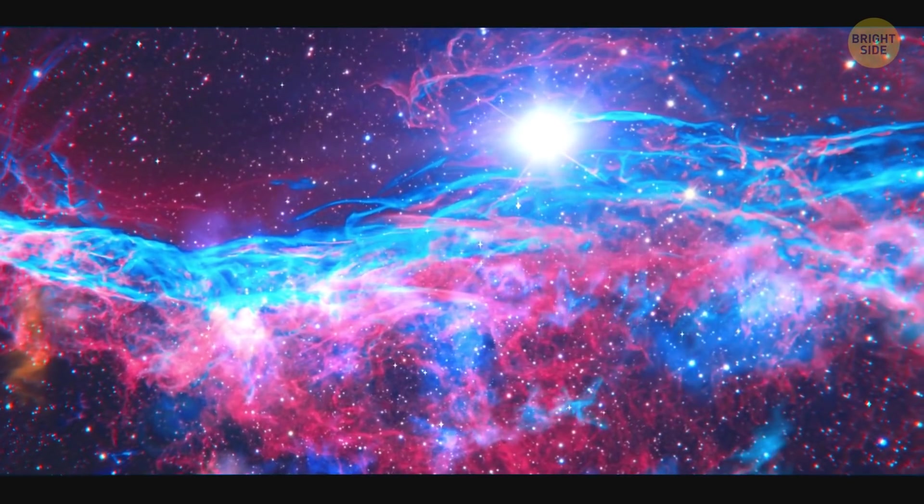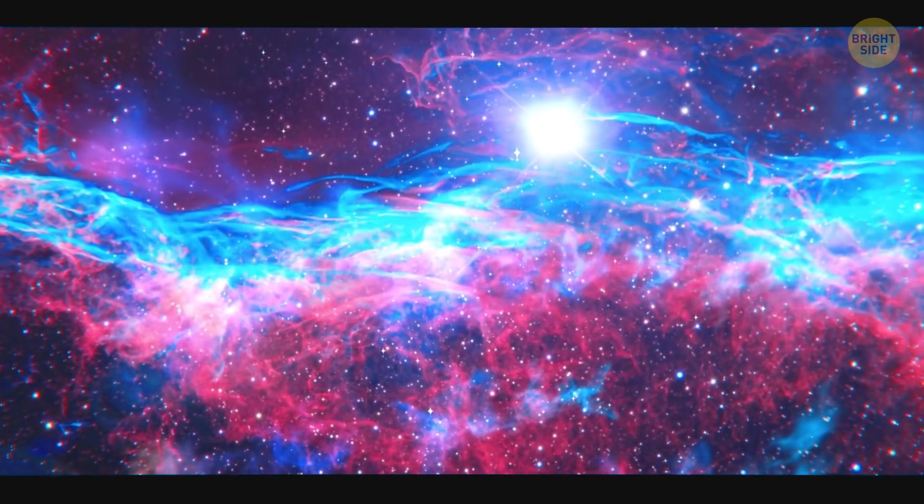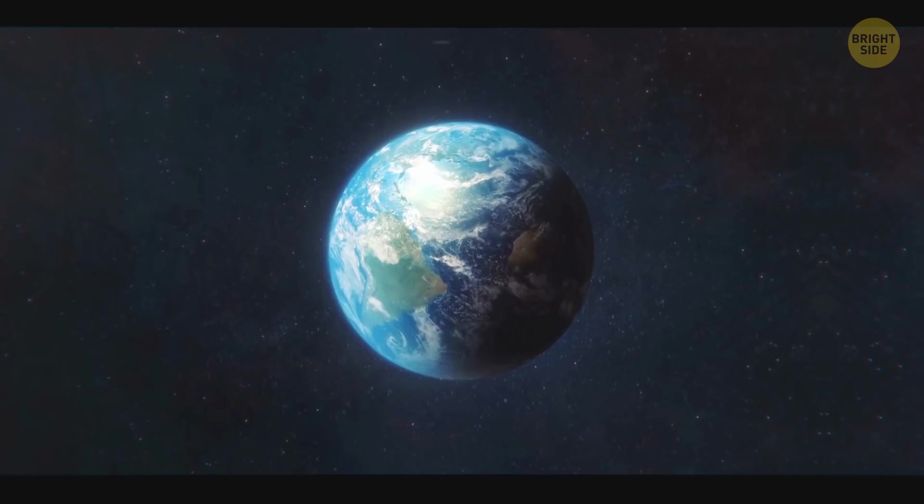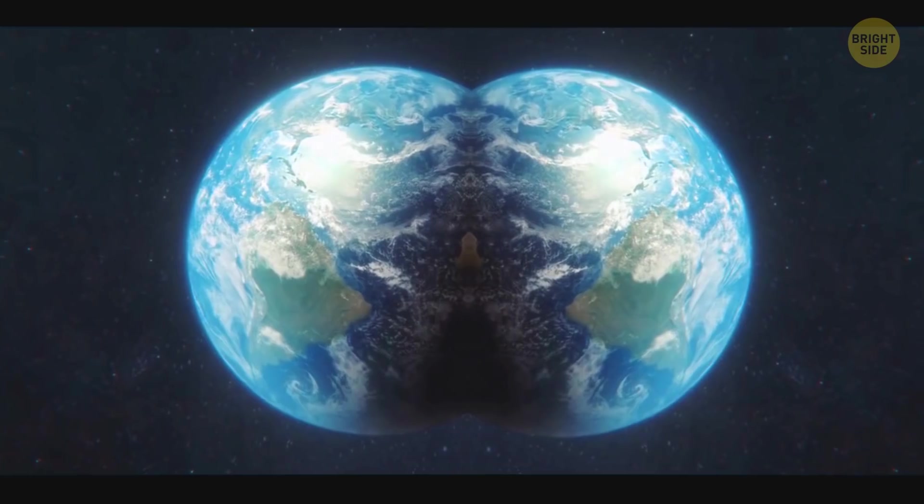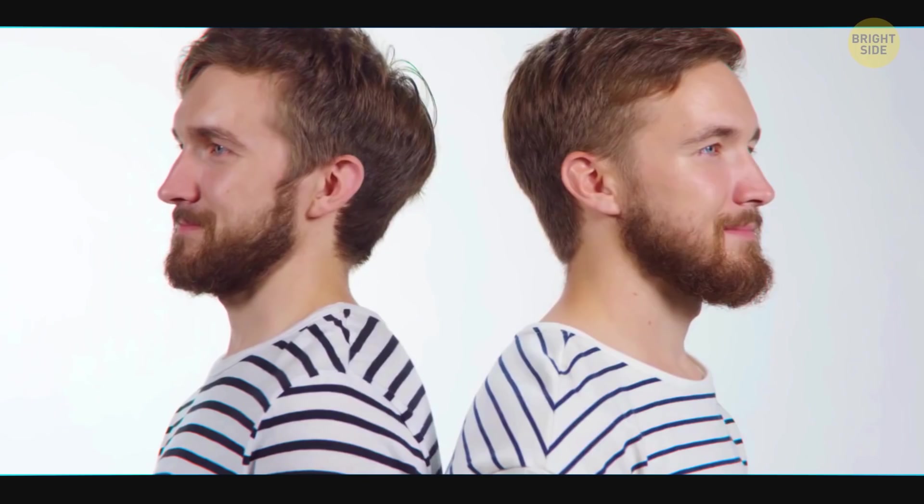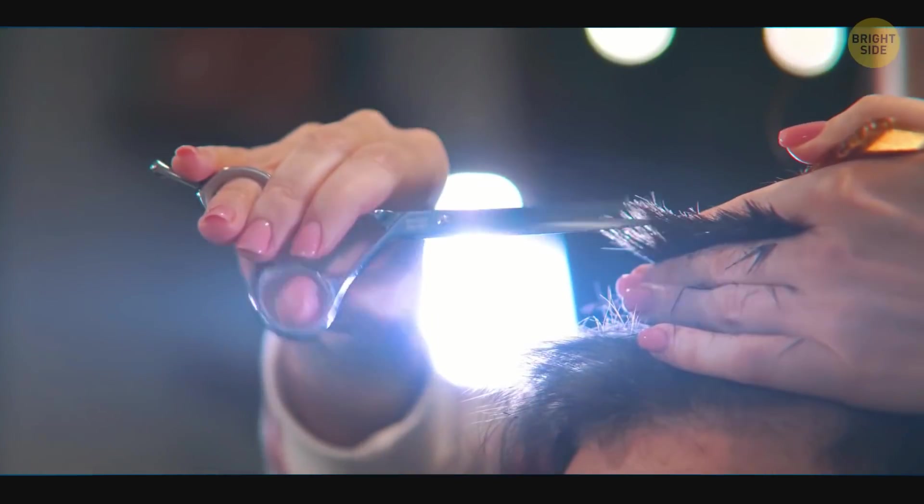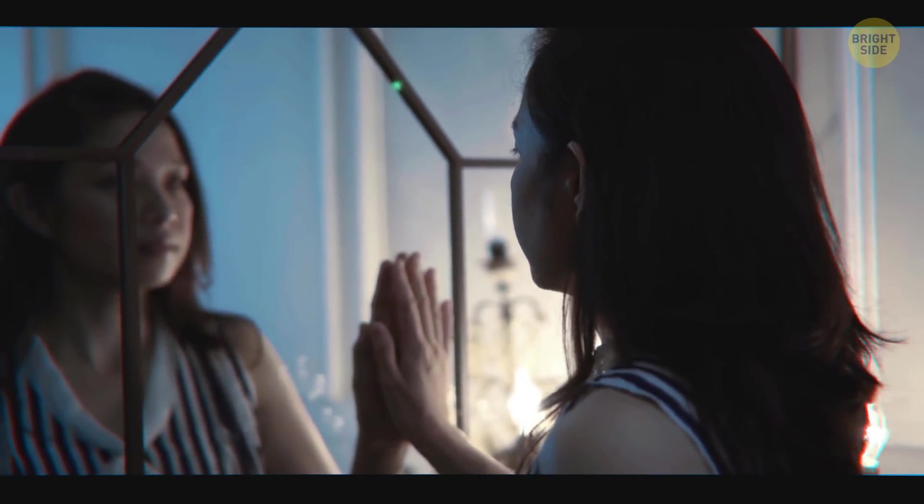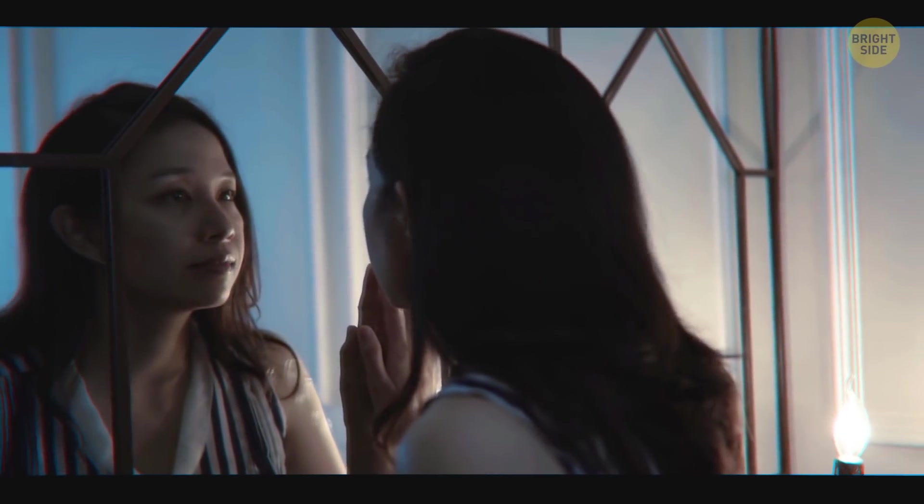Another theory is even more difficult to comprehend. The universe is indeed infinite, and our part of it isn't that unique. It means that somewhere out there, there's another you. Or rather, other yous. One of them is just a bit shorter, another wears their hair in different ways, and a third one is identical to you in all possible ways.